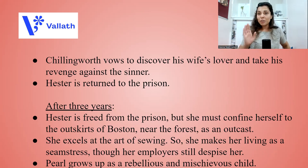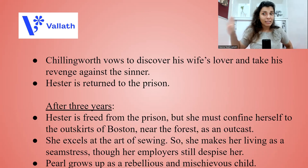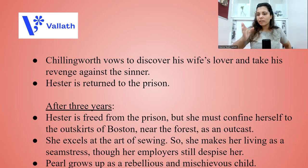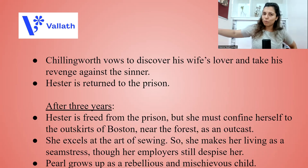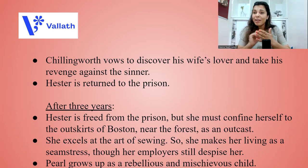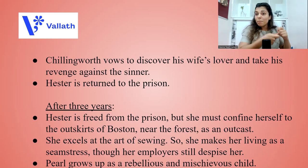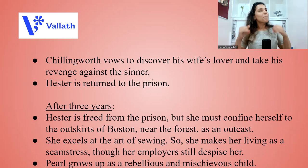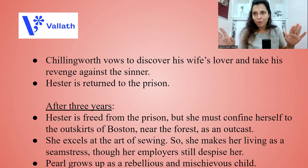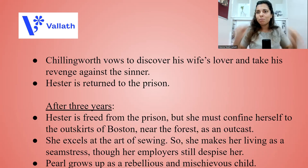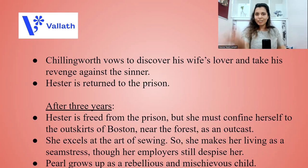Three years pass. Hester is freed from prison, but she must confine herself to the outskirts of Boston near the forest as an outcast — she has committed adultery and cannot live among the people of Boston. She is very capable, though, and excels at the art of sewing, making her living as a seamstress. Her employers despise her, yet they take her service — a clear display of social hypocrisy, which is another theme of the novel.